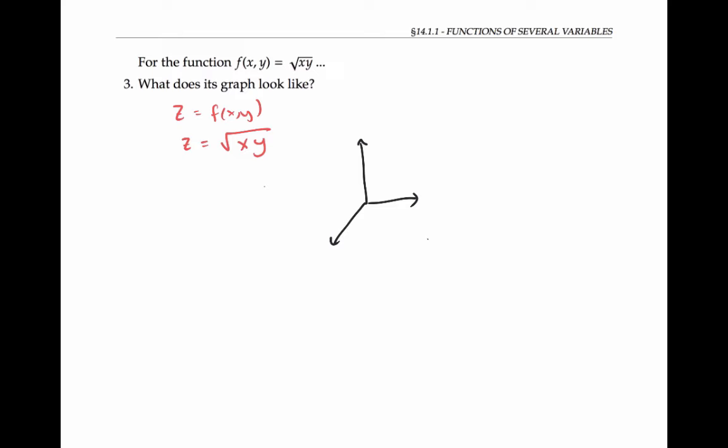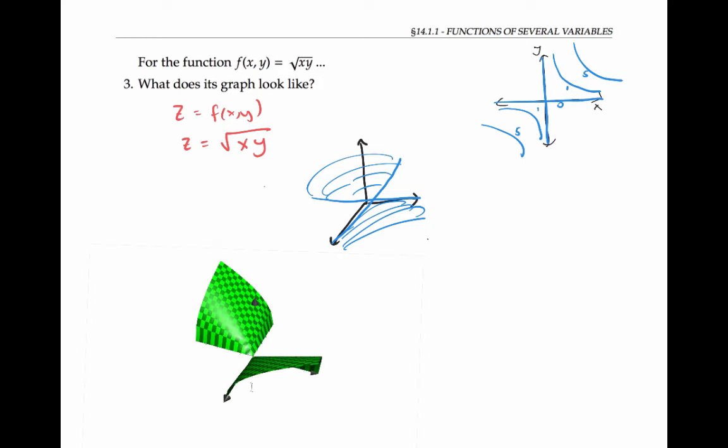Remember, our graph of level curves told us that our function had height zero along the x and y axes, and then increased in height as we went away from the origin in the first and third quadrants. I can try to translate that into a 3D graph. It might look something like this. I can get a better picture using graphing software, and here's another picture from a different angle.